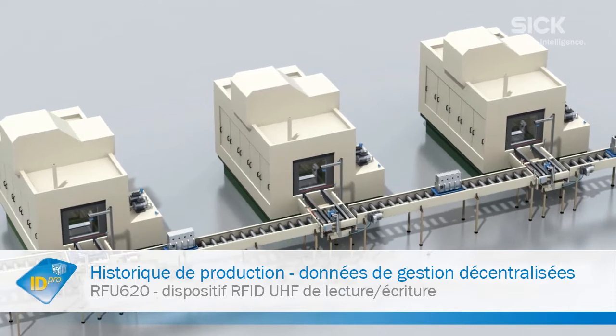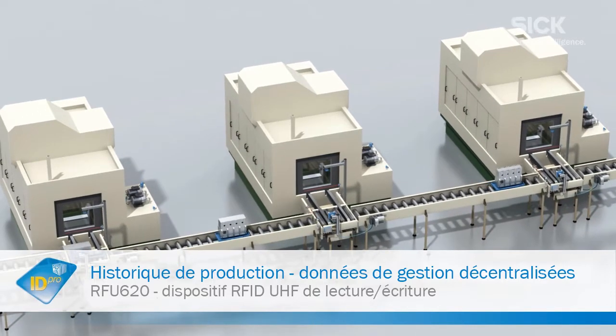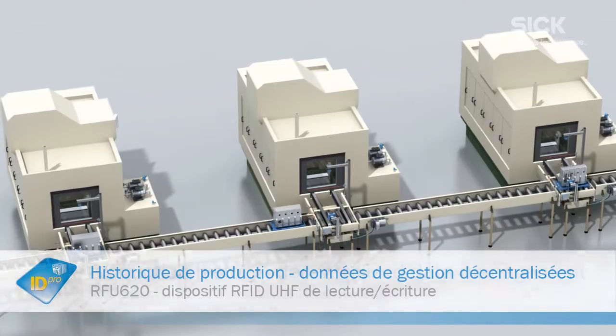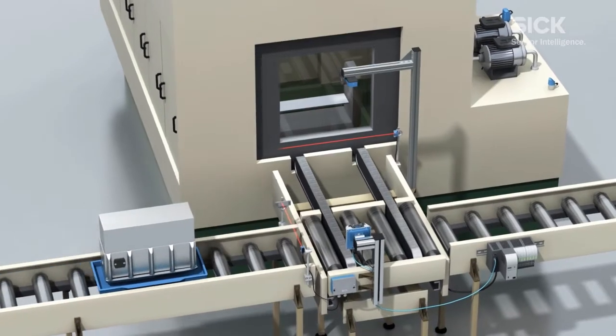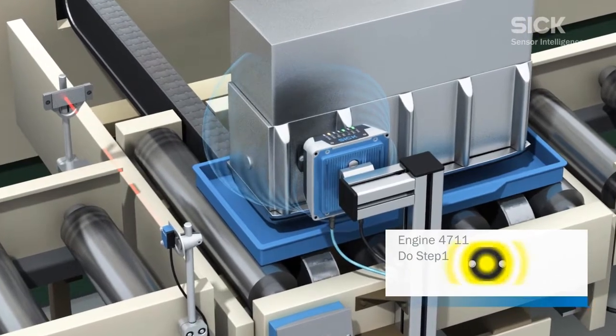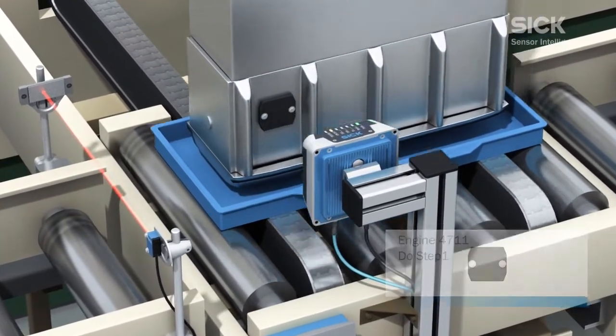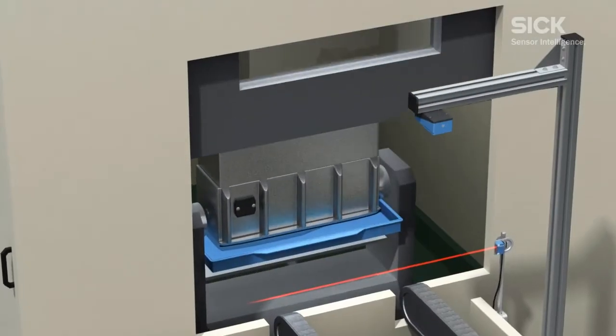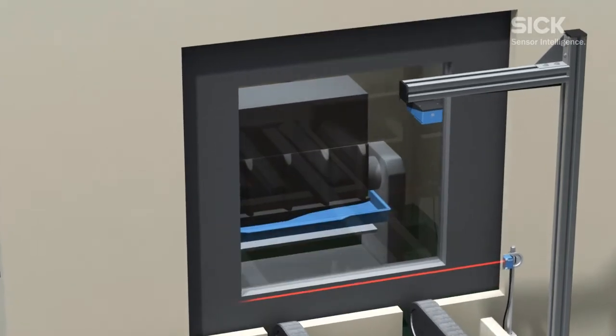The demand for increasing variety means that production lines must work with flexible production stations so that different products can be manufactured on a single line. The machines on the line must be able to complete a variety of tasks depending on the workpiece.